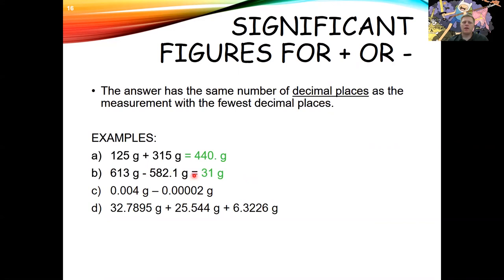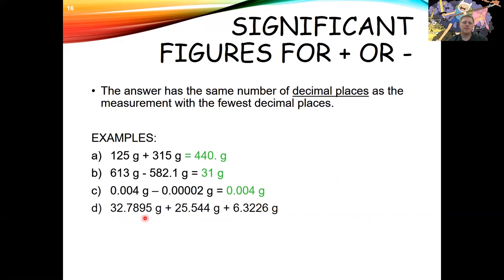For 0.004 − 0.0002 grams, the result is just 0.004 grams — the subtraction isn't large enough to make a measurable difference. For the last set of numbers shown: one has four decimal places, the second has three, and the last has four. So the answer can only have three decimal places.